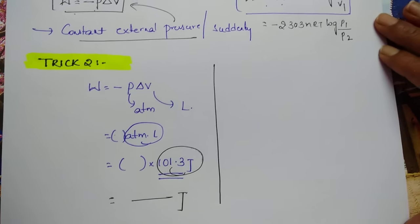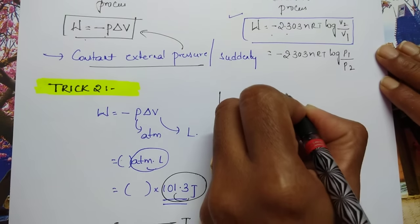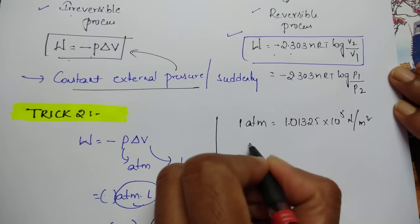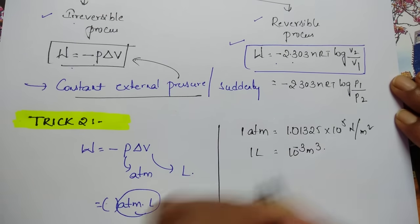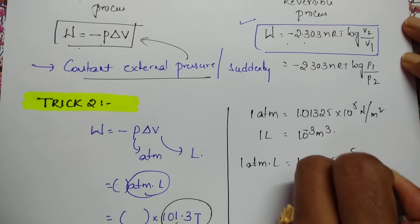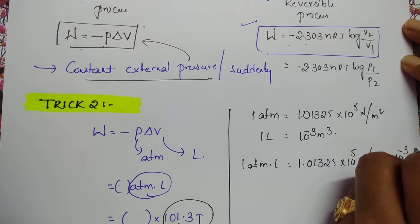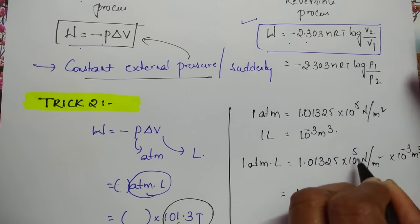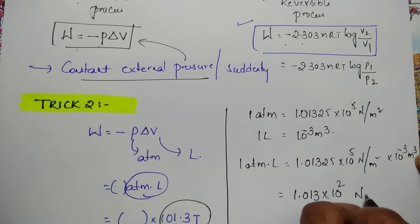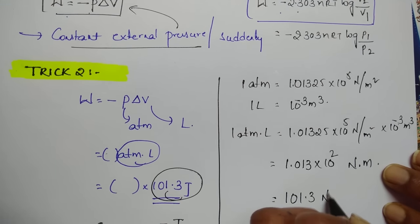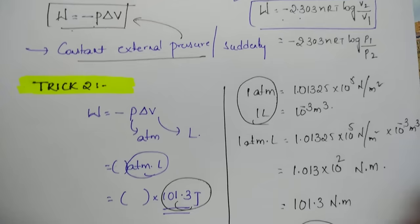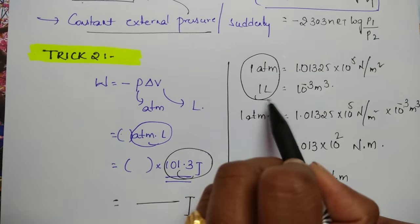Let us see why you multiply by 101.3. 1 ATM = 1.01325 × 10⁵ N/m², and 1 liter = 10⁻³ m³. So 1 ATM·liter = 1.01325 × 10⁵ × 10⁻³ = 101.3 N·m = 101.3 Joules. So remove 1 ATM·liter and replace it with 101.3 Joules.